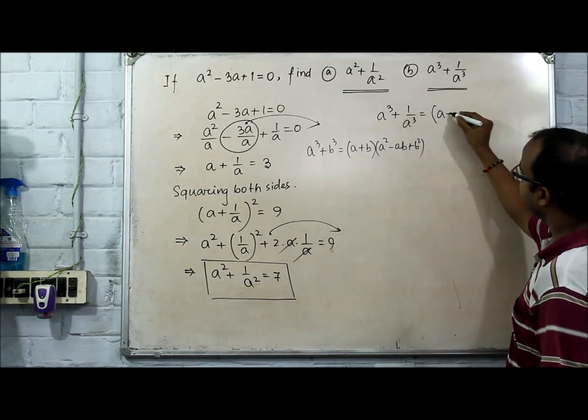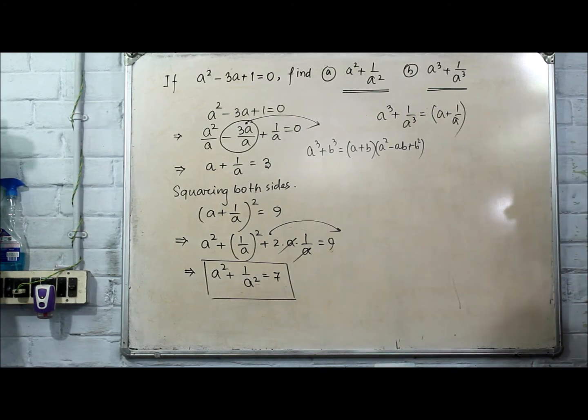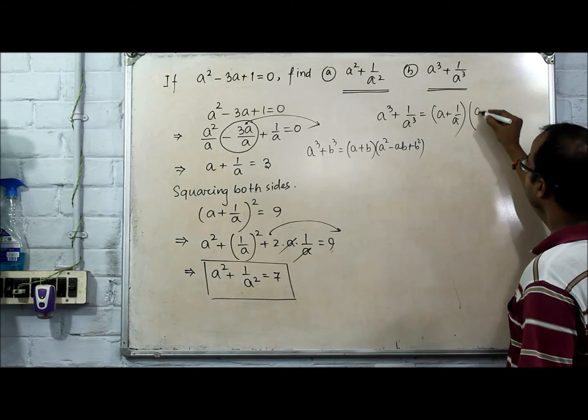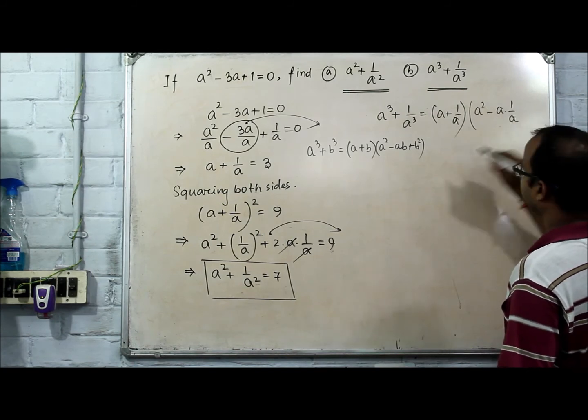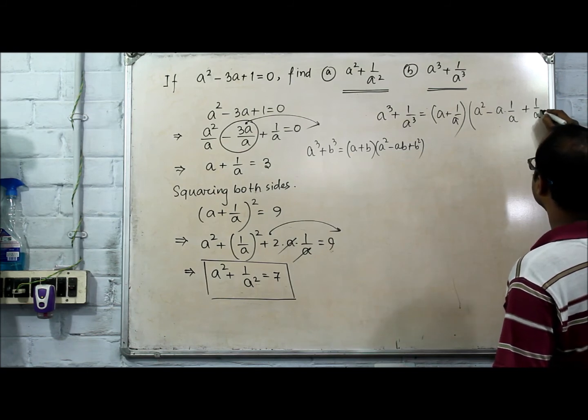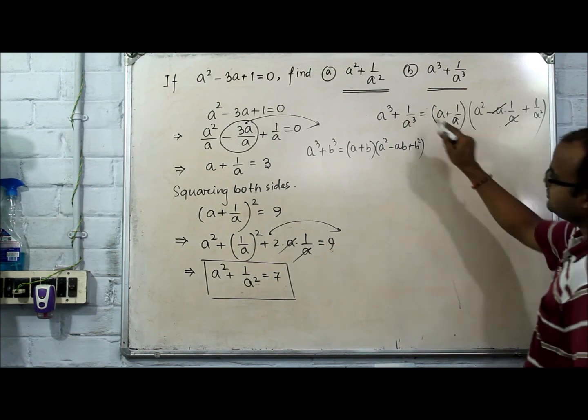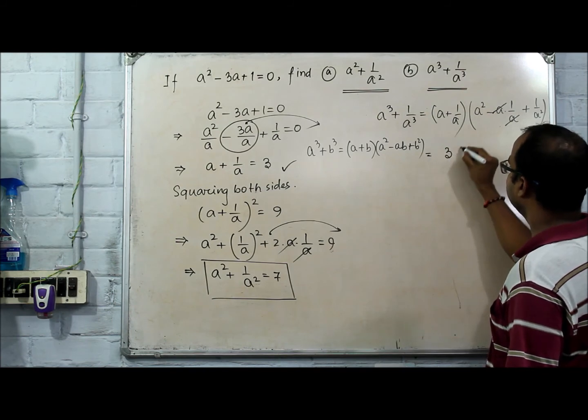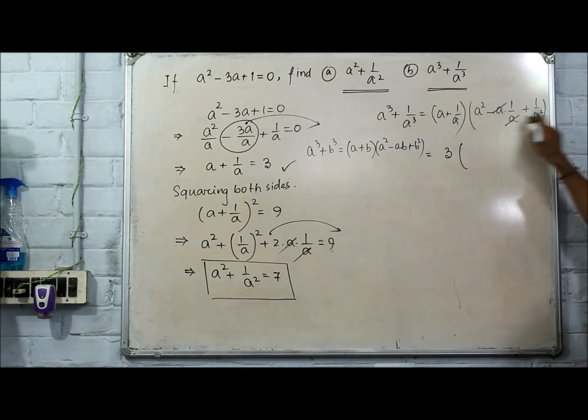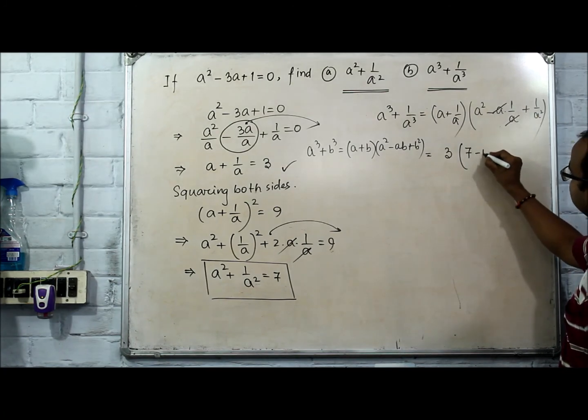You will get (a + 1/a)(a² - a·(1/a) + 1/a²). This a and this a will get cancelled. a + 1/a = 3, so in this place we write 3. a² + 1/a² is equal to 7 and this is minus 1.